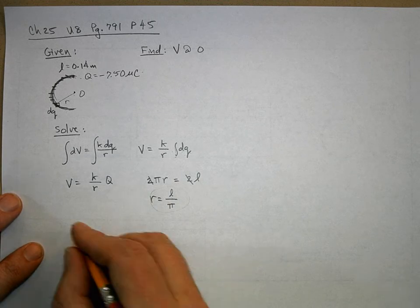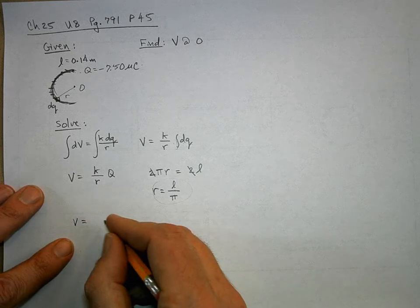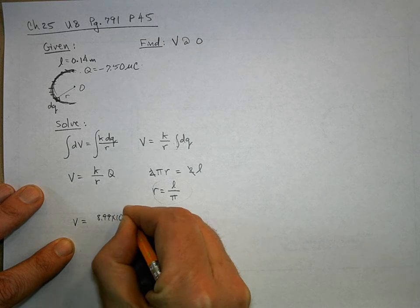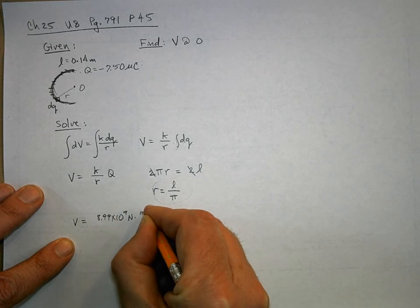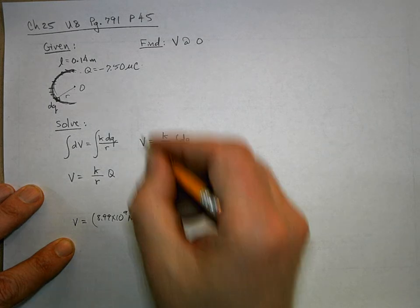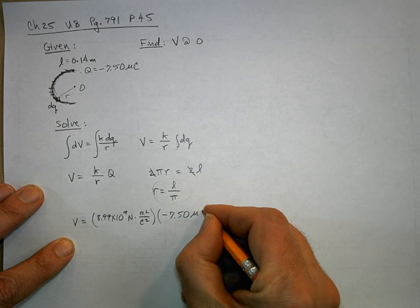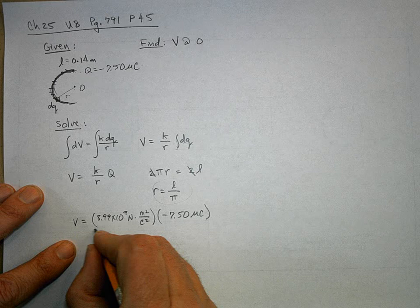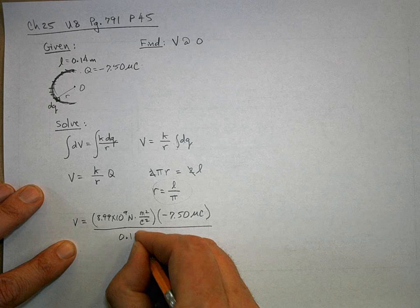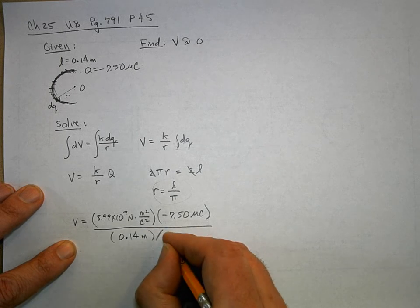So now I can plug in all my values. V equals K which is 8.99 times 10 to the 9 newton meters squared per coulomb squared, times the total charge which is negative 7.50 microcoulombs, and I'm going to divide that by L which is 0.14 meters and divide that by π.